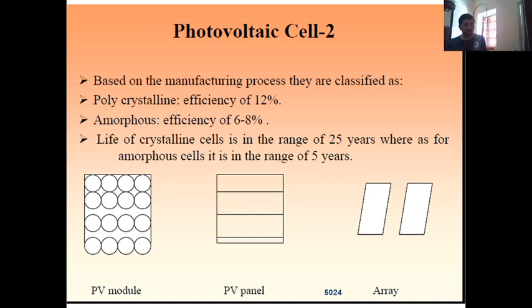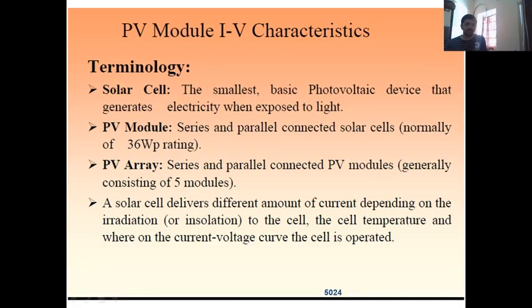You can see the examples: monocrystalline silicon, polycrystalline silicon, or amorphous silicon. Solar cell is the smallest basic photovoltaic device that generates electricity when exposed to light. PV module is the series and parallel connected solar cells, normally of 36 watt peak rating. An array, a photovoltaic array, is a series and parallel connected PV modules, generally consisting of five modules. A solar cell delivers different amounts of current depending on the irradiation.